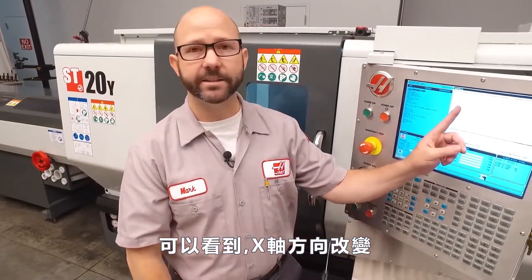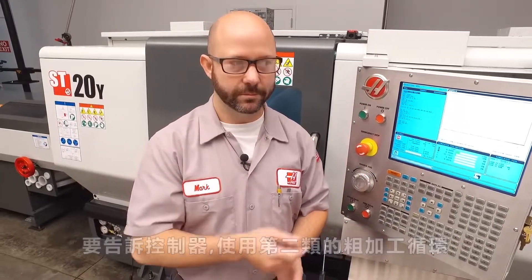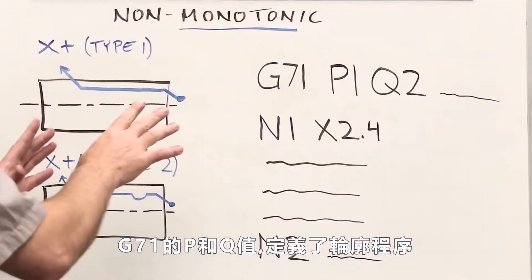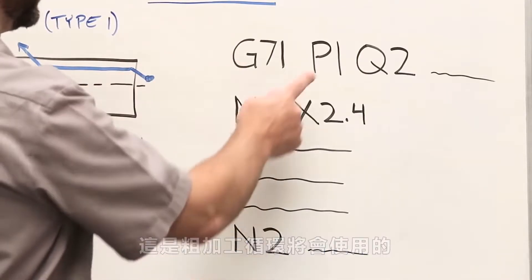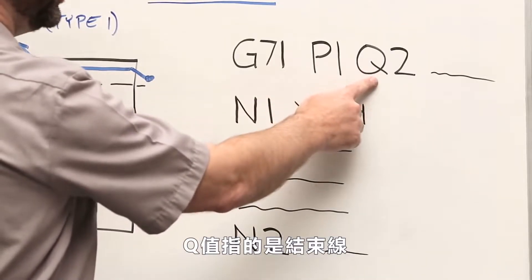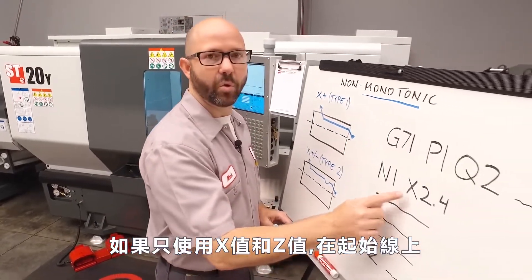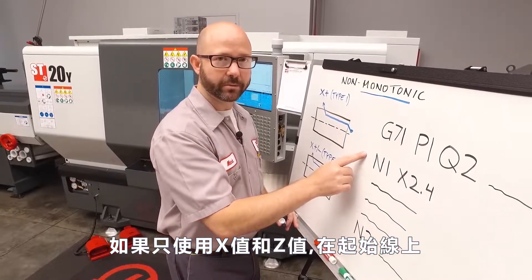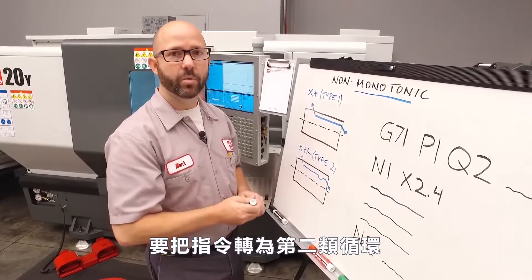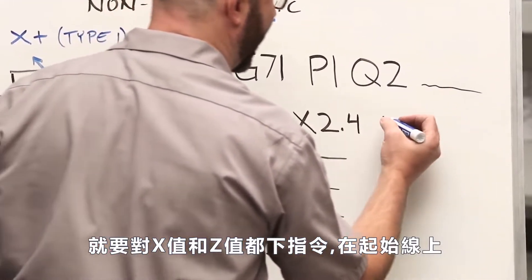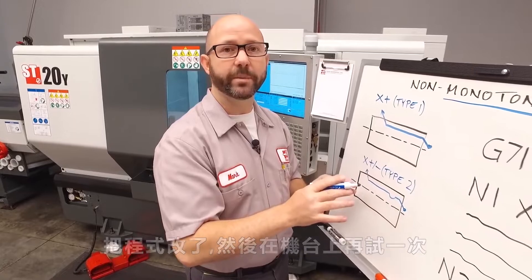We can now see that our X-axis is changing direction, which means we need to tell the control to use a type two roughing cycle. Our G71 P and Q values define the contour subroutine that the roughing cycle is going to use. The P value refers to the starting block line, and the Q value refers to our ending block. If we only use an X or a Z value on our starting block — one or the other — the control is going to default to a type one cycle. To command a type two cycle, we must command both an X and a Z value on our starting block. This is what lets the control know that we're going to be changing directions.